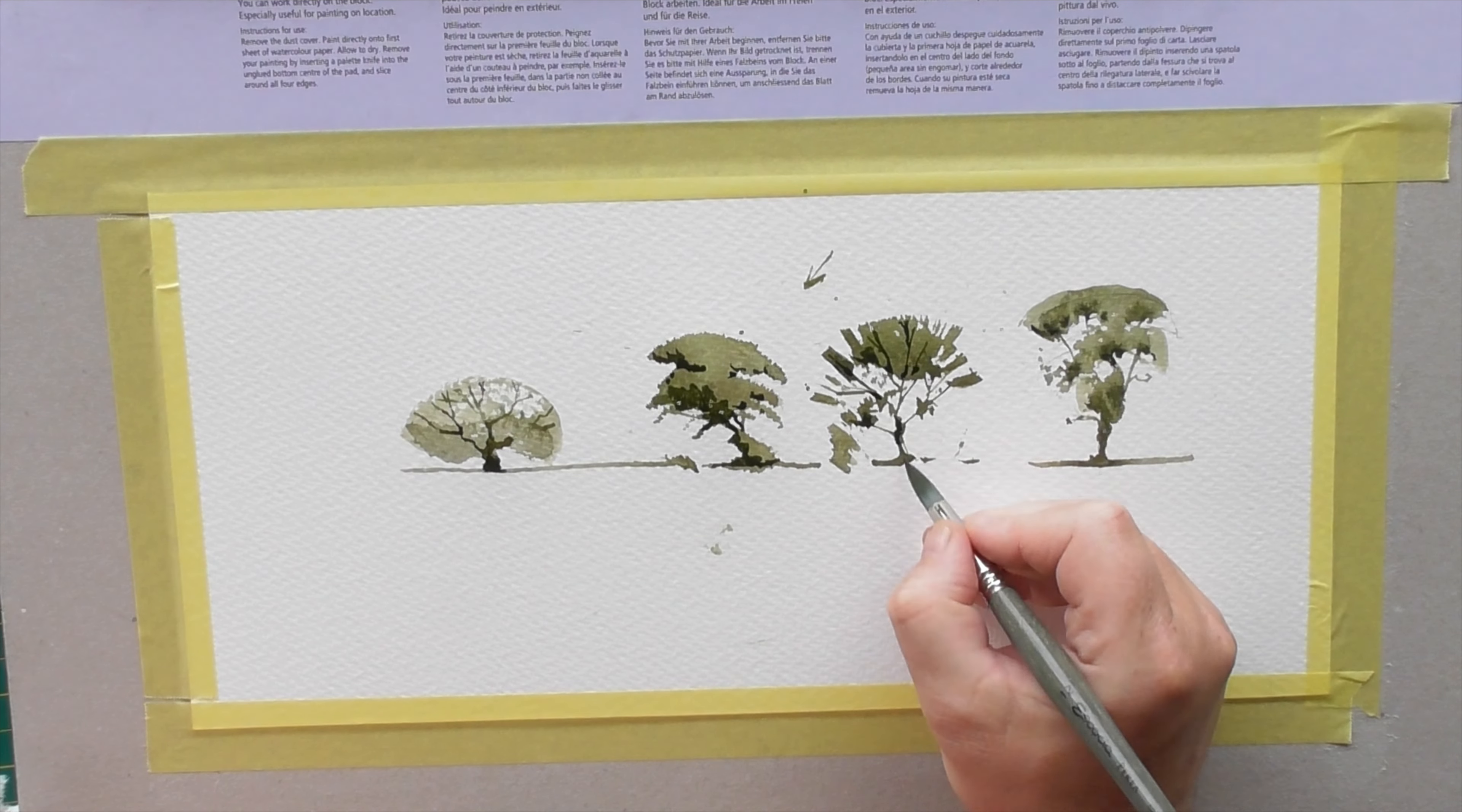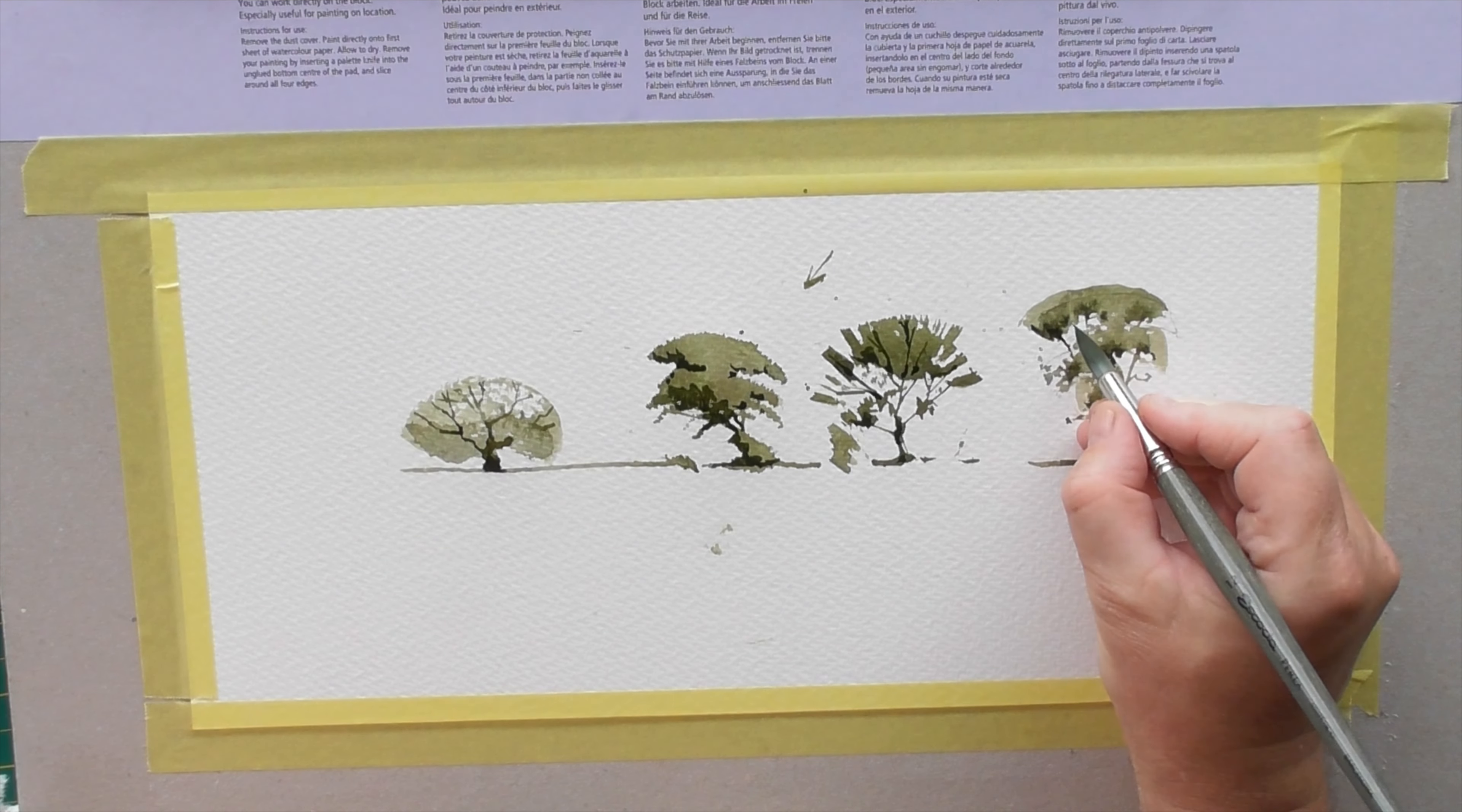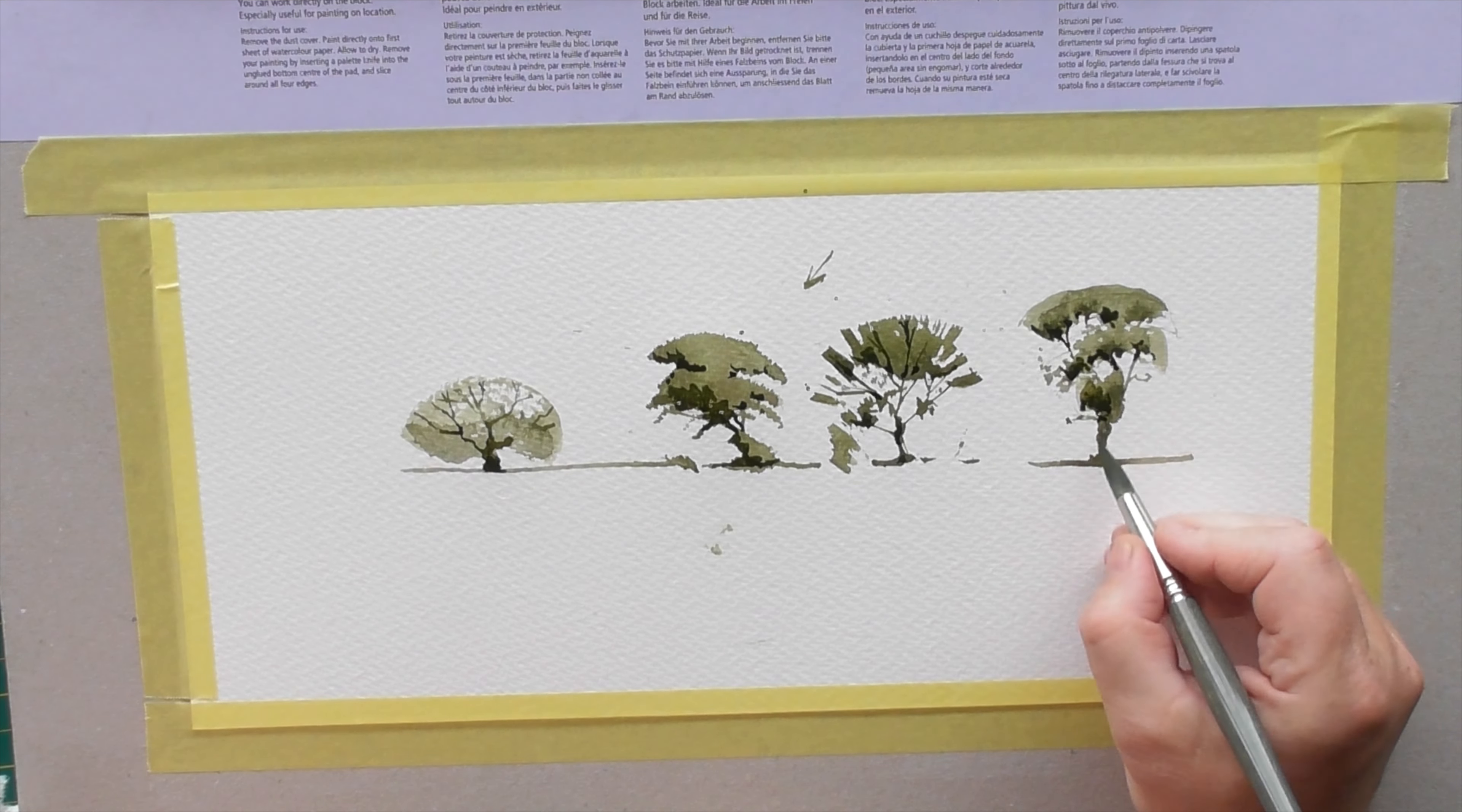If that's how you want to do your trees, you do it that way. And the same with this one over here. Bring it down there, just add in little bits of shadow, little bits of shade, just to certain areas. There you go.